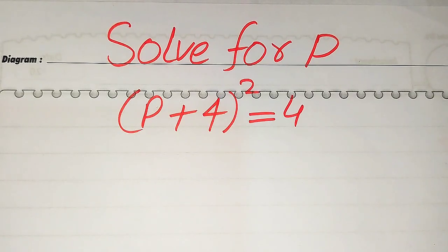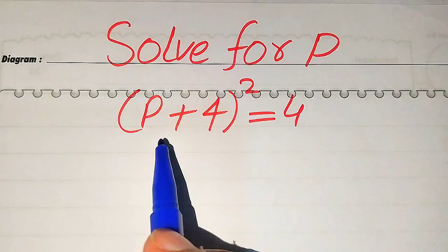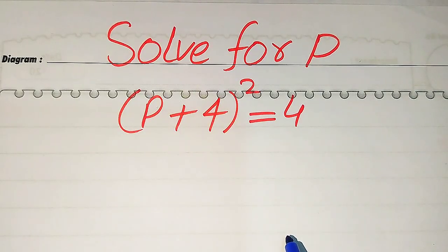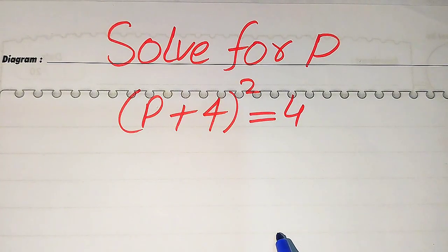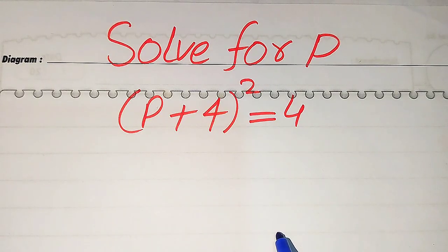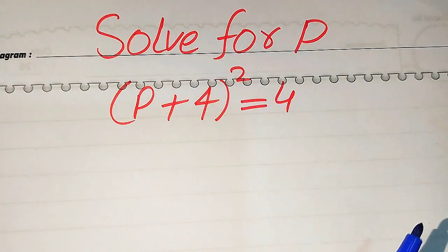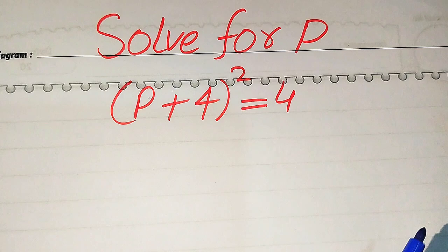Hello everyone. How to solve this problem for the values of P, if we have (P + 4)² = 4. We solve this problem for all the values of P. First, we find all the roots of this equation, and at the end we will verify which of the roots are solutions and which are extraneous roots.